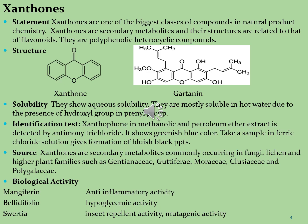Let's see what are the xanthones. Xanthones are one of the biggest class of compounds in natural product chemistry. Xanthones are secondary metabolites and their structures are related to that of flavonoids. They are polyphenolic, heterocyclic compounds. You can see the structures of xanthones, which consist of two phenyl groups. The second molecule is gratinine, which consists of a large number of polyhydroxyl and polyphenol groups.